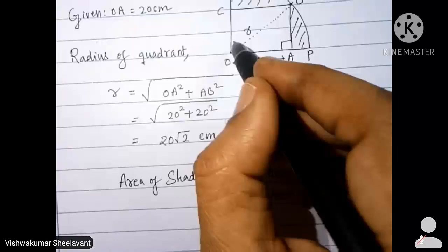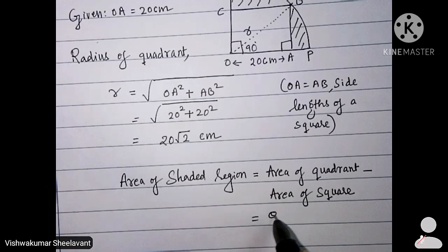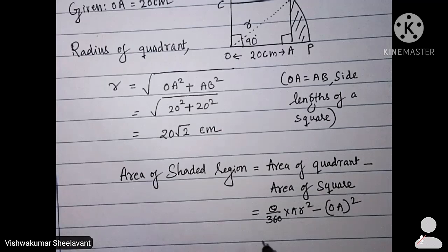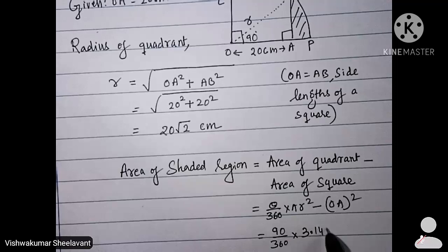Here it is 90 degrees, that means theta is 90. For this sector or quadrant, theta by 360 into pi r square minus side length square that is OA square. 90 by 360, pi value is given as 3.14.